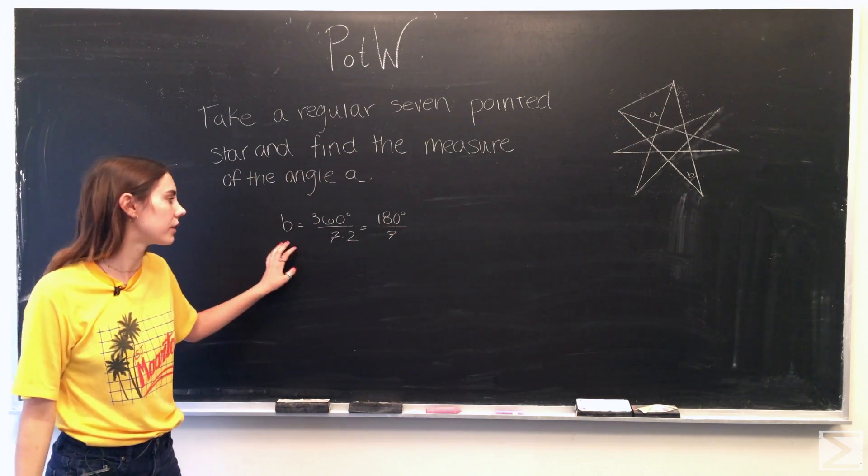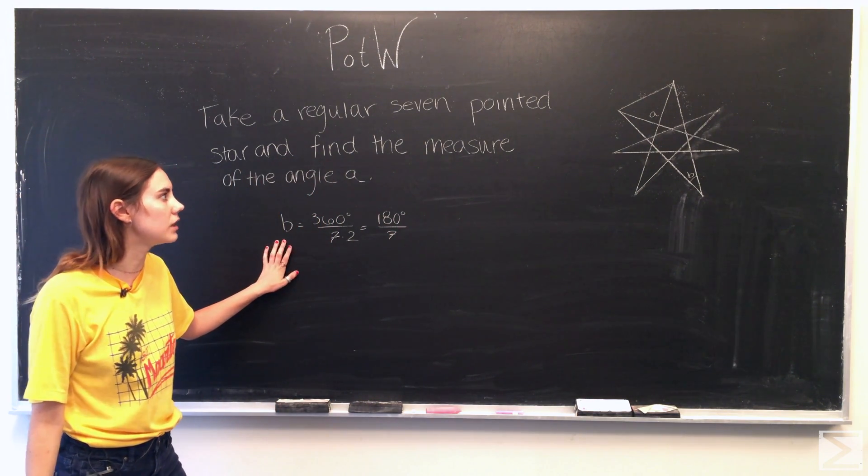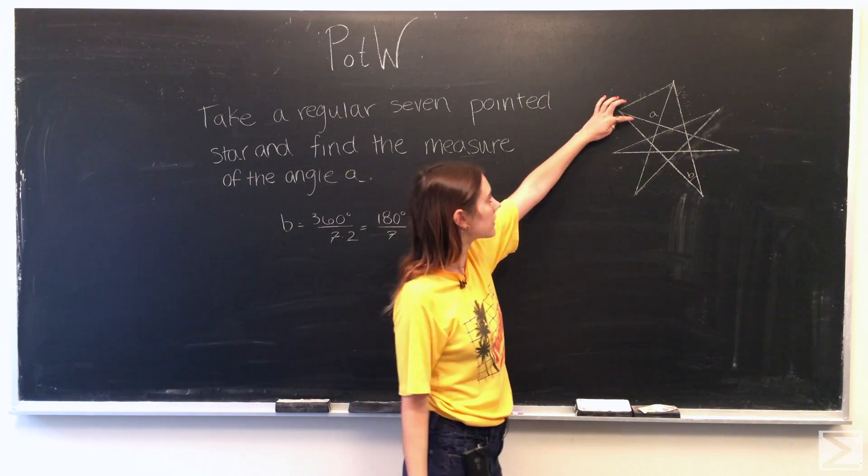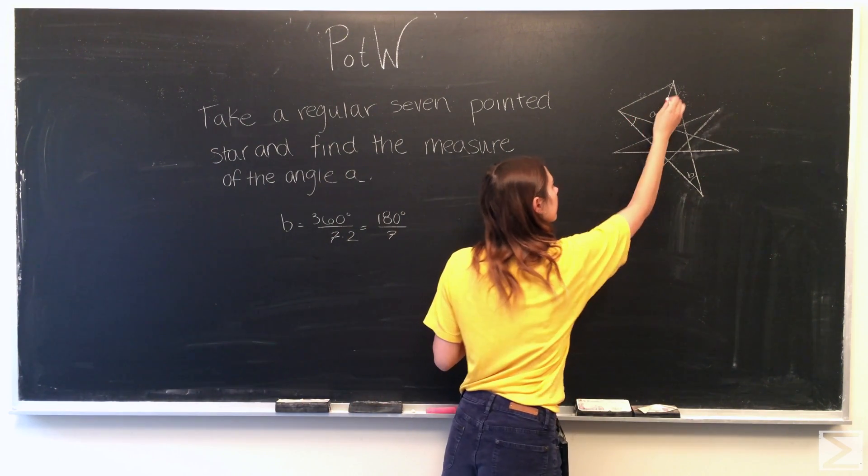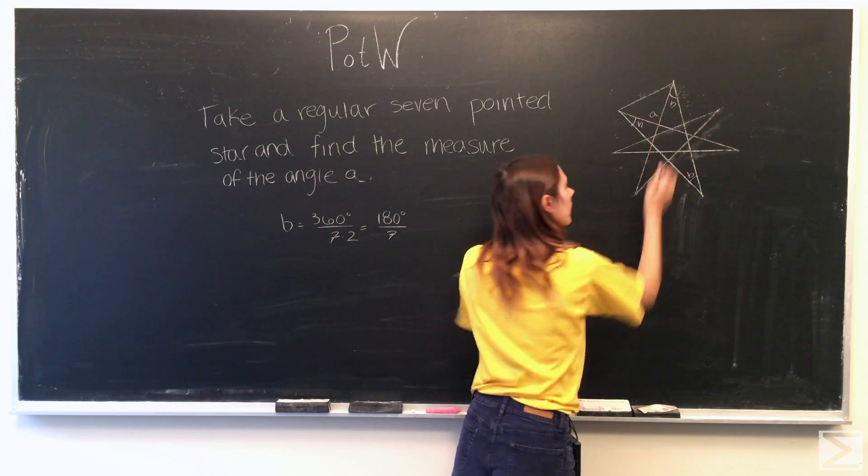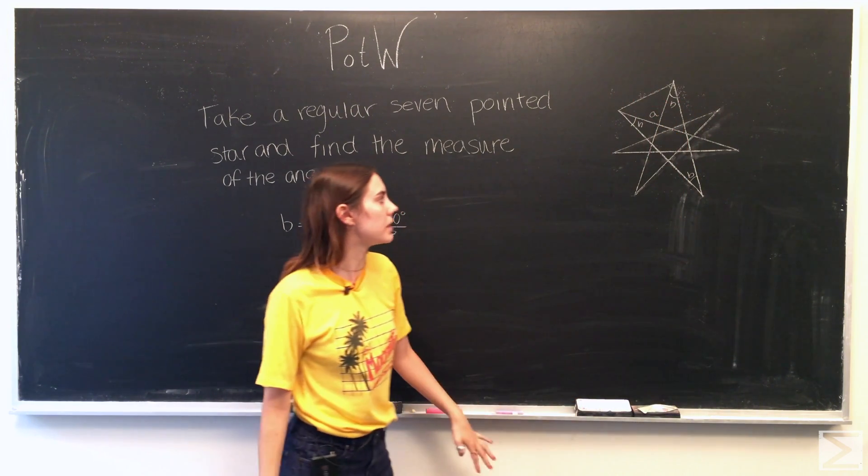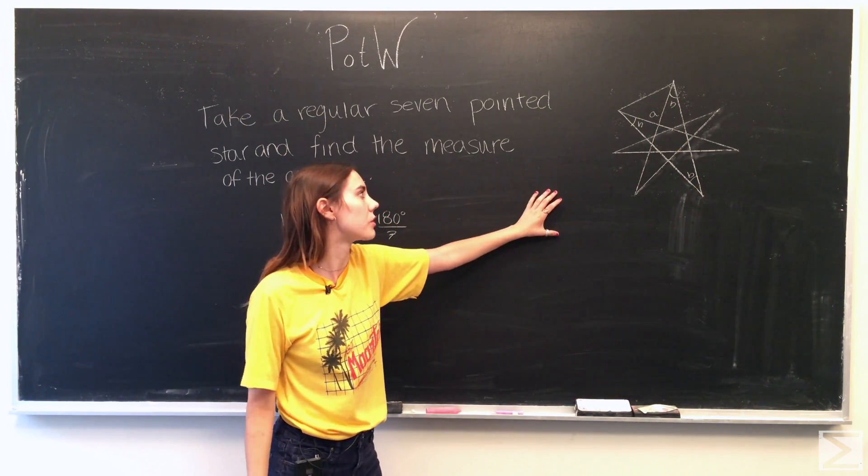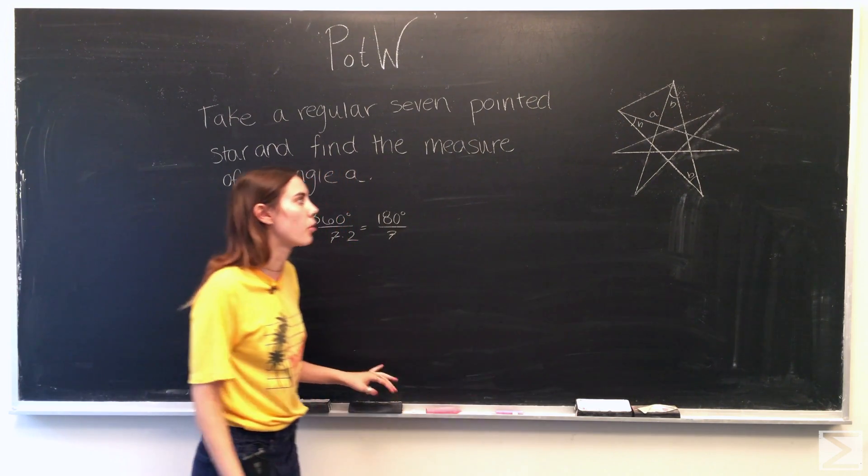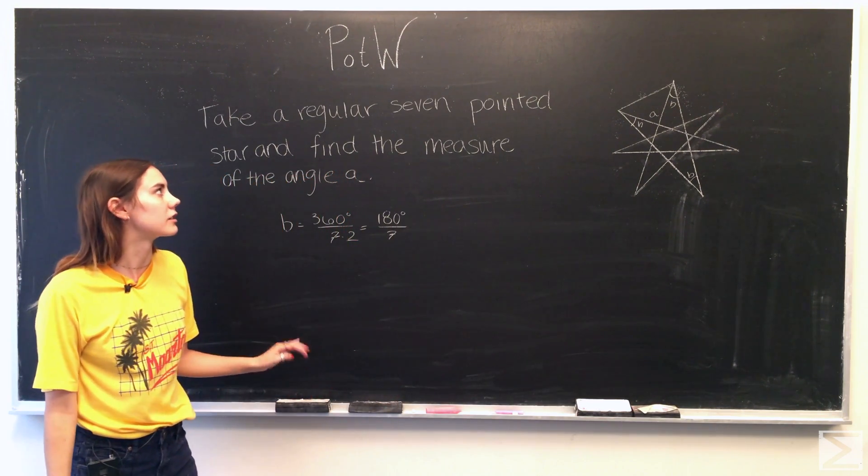So now that we have the measure of angle B, you'll also notice that this angle here and that angle are also angle B. There are just other triangles around the circle since this is a regular seven-pointed star.